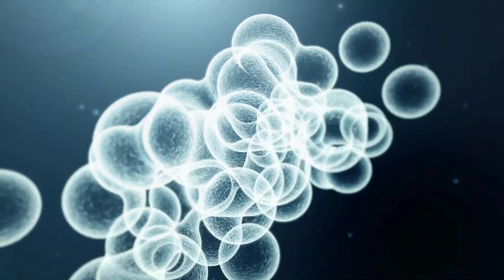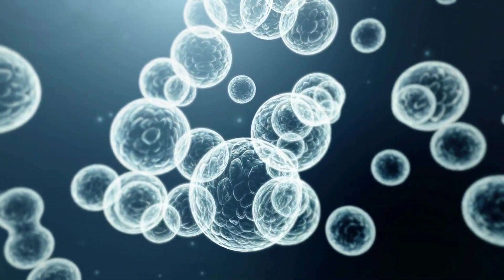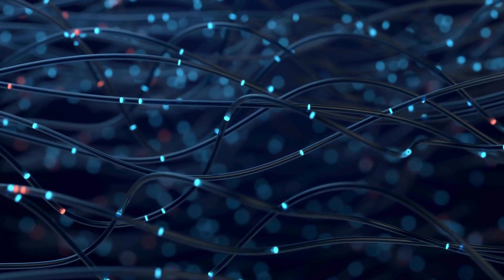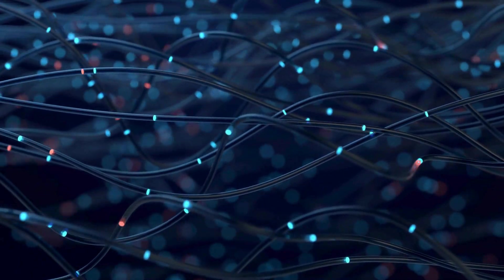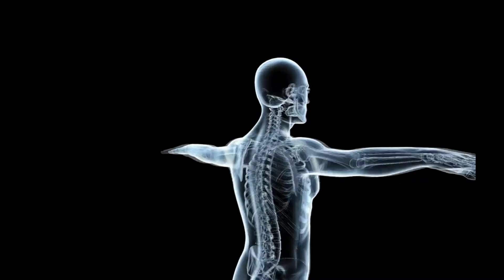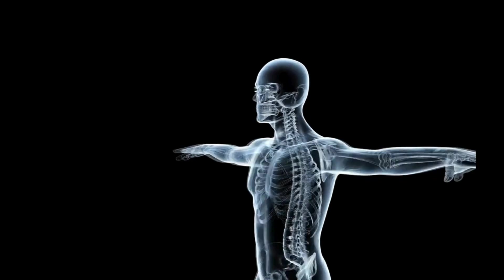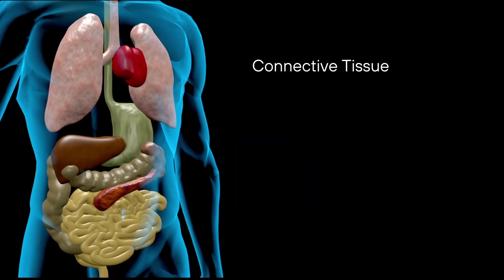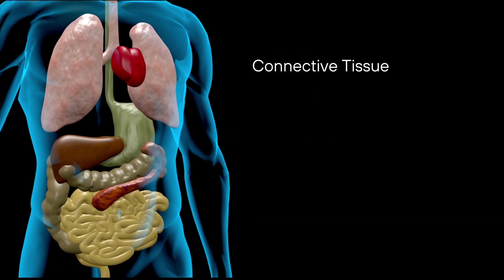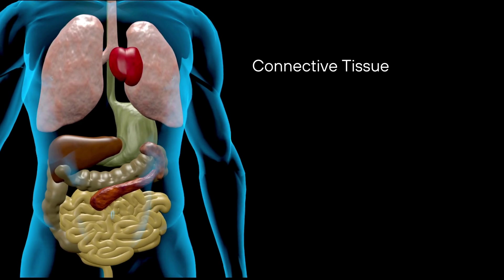Connective and support tissues consist of cells embedded in an extracellular matrix that contains fibers and ground substance. There are various main types of connective and support tissue, including connective tissue, which serves as filling material and has important functions in nutrient supply and immune defense.